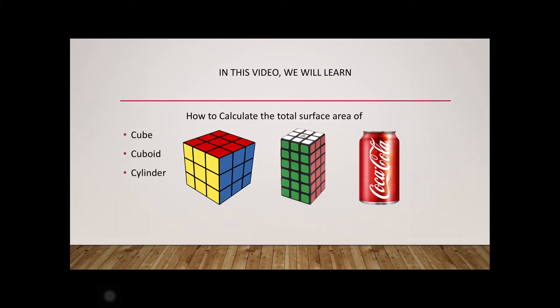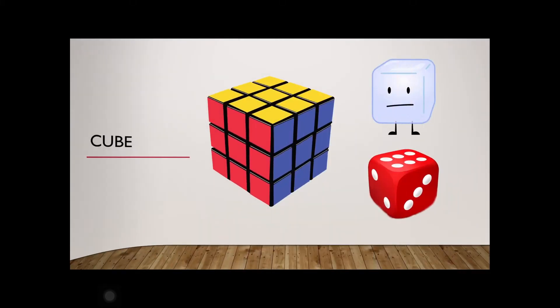Let's start off with a cube. At this point I want you to pause this video and look around to see if you can grab a solid that resembles a cube. If you found something that looks like a cube, that's great. If you haven't, that's still okay — we're going to examine a cube very closely so you can understand where exactly the formula for the total surface area comes from.